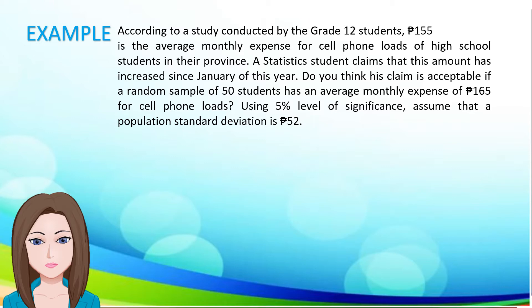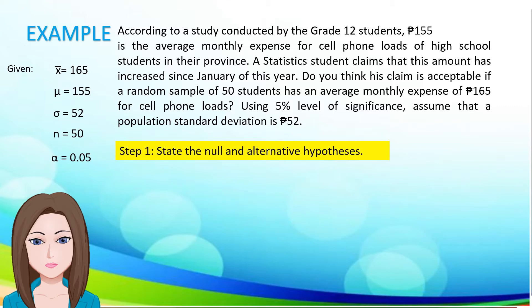Let us first identify the given. Our sample mean is 165. Our population mean is 155. Our standard deviation is 52 pesos. Our sample size is 50. Our level of significance is 5%, or 0.05. Following step 1, we state the null and alternative hypothesis. Our null hypothesis: mu is equal to 155. Our alternative hypothesis: mu is greater than 155.